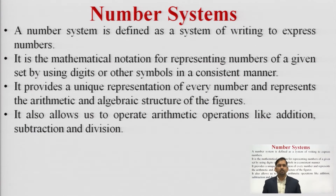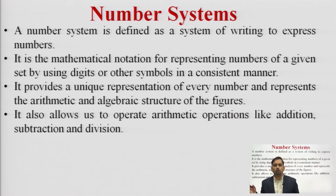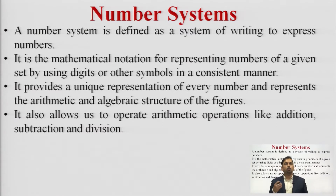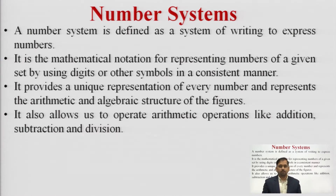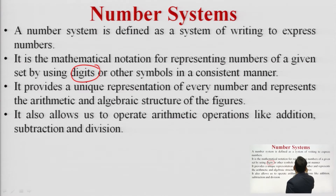A number system is defined as a system of writing to express a number. For example, we have the decimal number system that we follow, which uses digits 0 to 9. The digits keep on repeating — after 9 we have 10, 11, 12, and so on. The total number of digits used is 10. It is a mathematical notation for representing numbers using digits or other symbols in a consistent manner.